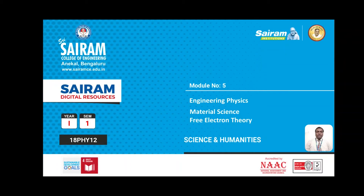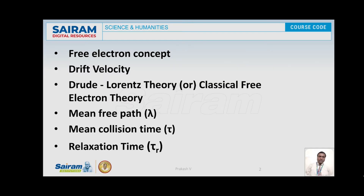Hello, welcome all of you to this lecture video. Here I am going to explain material science which comes under module 5 of engineering physics. The topics I will cover are: free electron concept, drift velocity, Drude-Lorentz theory or classical free electron theory, mean free path lambda, mean collision time tau, and relaxation time tau r.